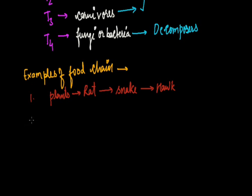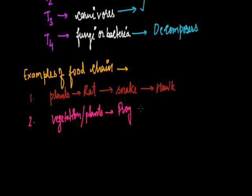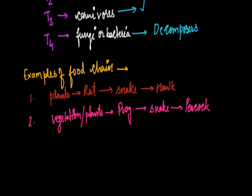Another example of a food chain: vegetation, or we can say plants, eaten by frog, eaten by snake, eaten by peacock. So these are examples of a food chain.